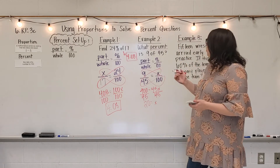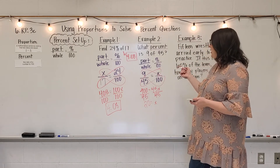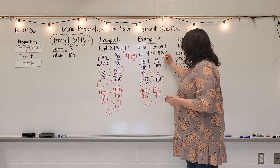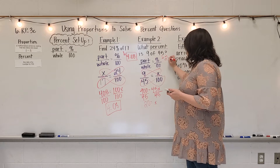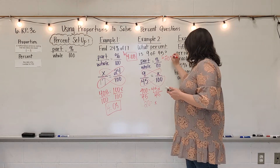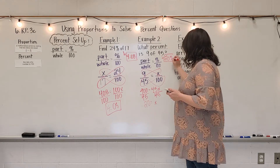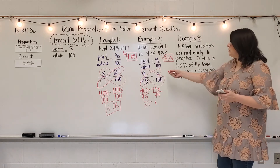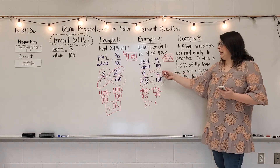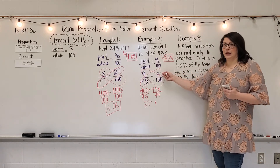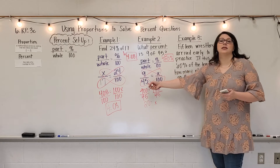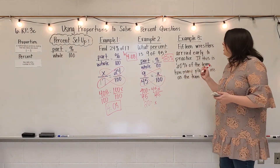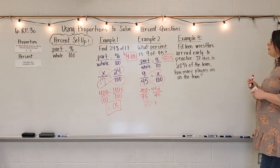So what percent is 9 of 45? The answer is 20 percent. This number should be less than 100 because 9 is less than 45, which confirms our reasonableness.